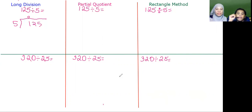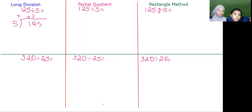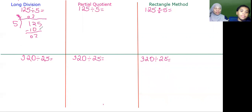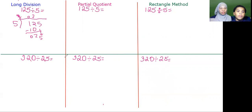And then five can go into 12 two times. So you write two right here, and then you multiply it. Two times five equals ten. And then you subtract it — two minus zero equals two, one minus one equals zero. And then you have to bring down the five. Five can go into twenty-five five times. You put five right here. Five times five equals twenty-five, and you subtract it and you get zero.